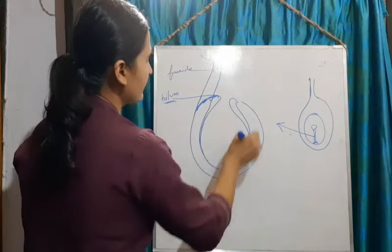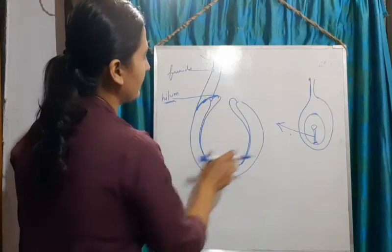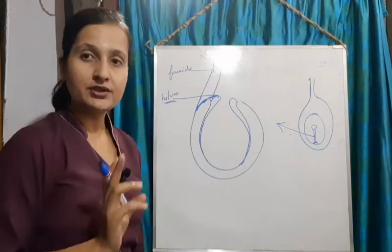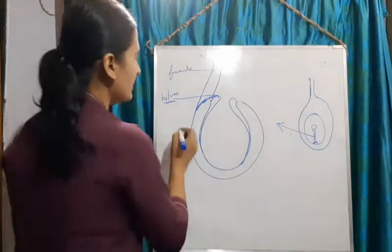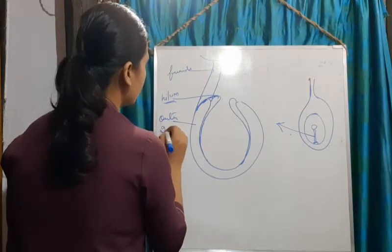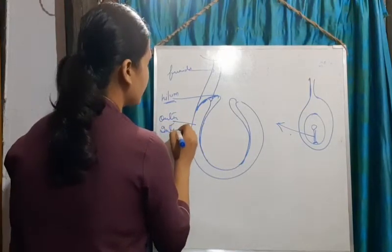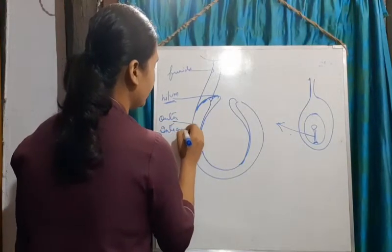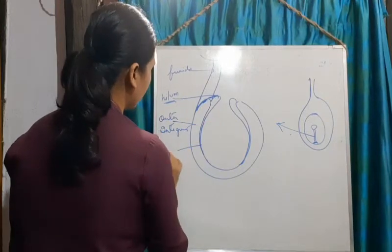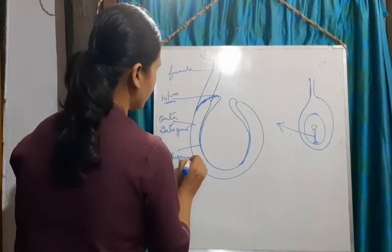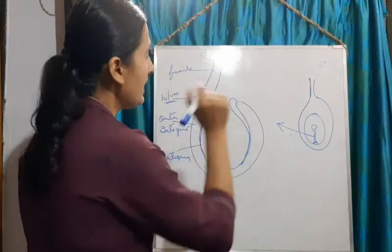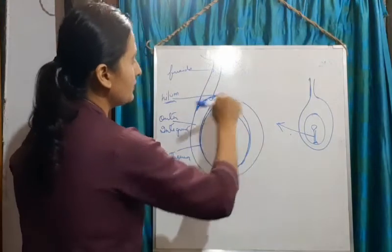This ovule is surrounded by a layer called integuments. There are two integuments: the outer one is called the outer integument — it is a protective layer — and the inner one is called the inner integument.